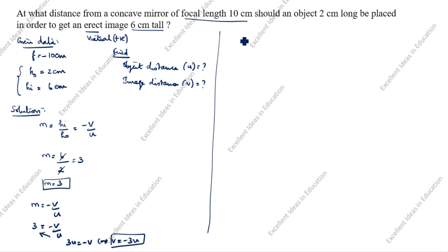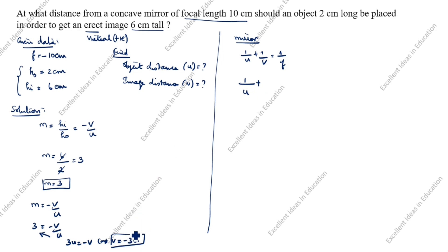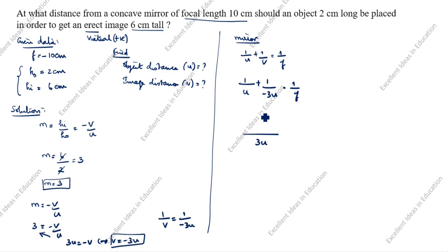Now we will find u and v using the mirror formula: 1/u + 1/v = 1/f. We don't know u, so we write it as is. For 1/v, we substitute v = minus 3u, so 1/v = 1/(minus 3u). Now: 1/u + 1/(minus 3u) = 1/f. We take the common denominator 3u.